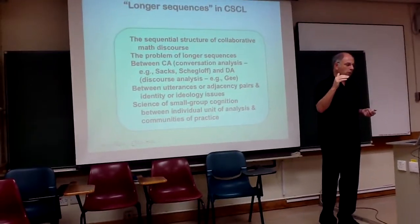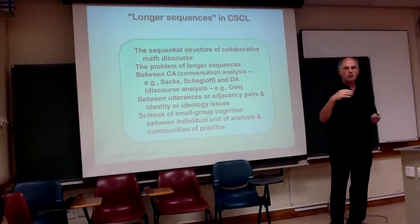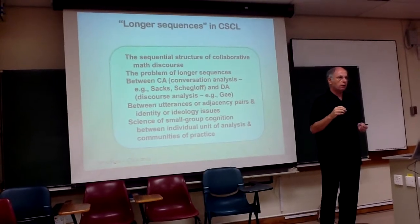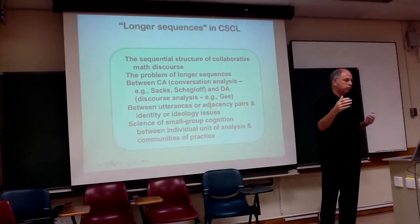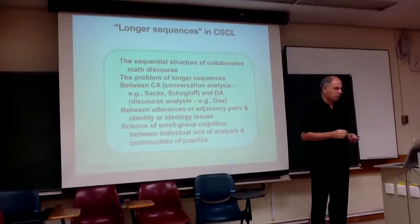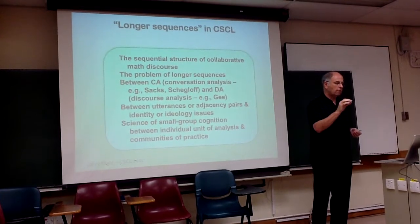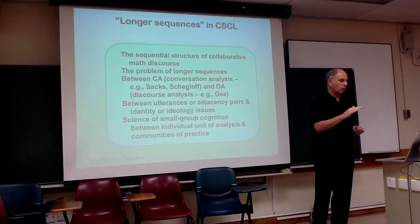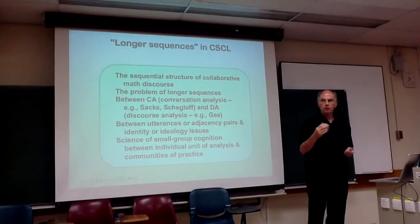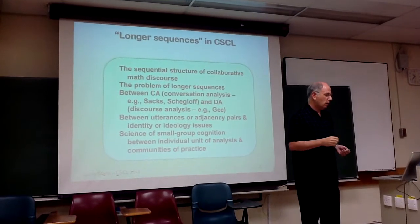These longer sequences are somewhere between the adjacency pairs traditional in conversation analysis and the higher-level topics that discourse analysis looks at, such as political issues about people's relationships. It's a larger unit of analysis than individual utterances or adjacency pairs, but smaller than a person's identity issues or ideological issues. I've been trying to develop a science of this level of analysis, and this is a contribution to that.